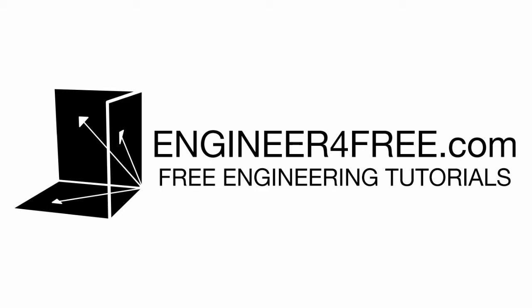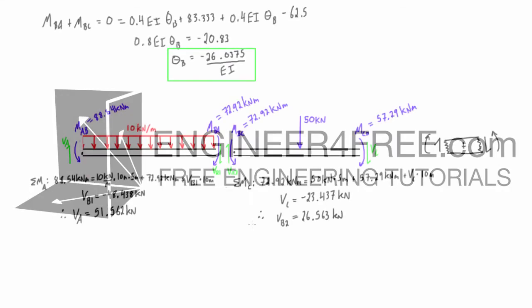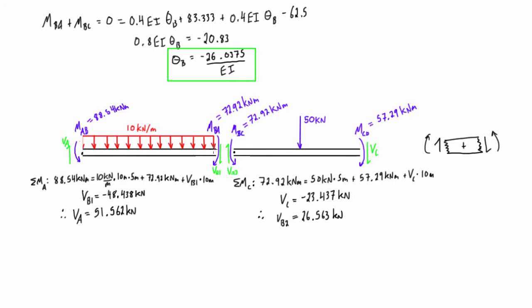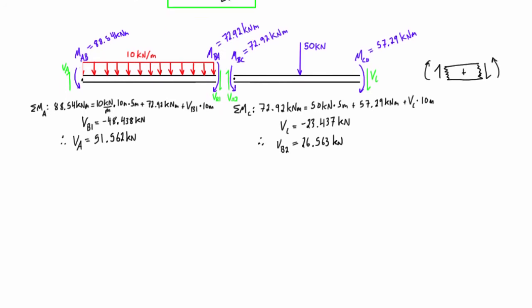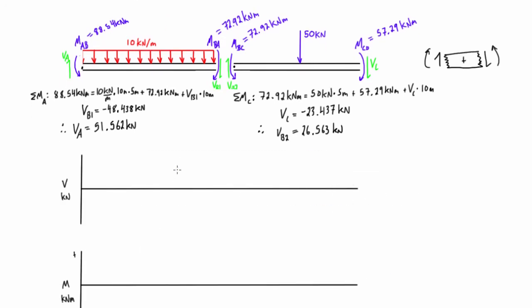Alright guys, welcome back. This is Part 3, the final part of our slope deflection method example problem, picking up exactly where we left off in the last video where we had just calculated the end shears and moments for the two spans of our beam. What we want to do now is set up the shear force and bending moment diagrams.